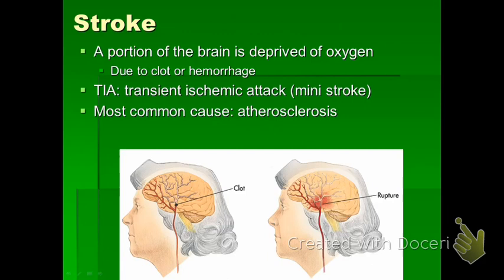A more serious general medical emergency is a stroke, also called a cerebrovascular accident or CVA. A stroke occurs when an area of the brain becomes deprived of blood and oxygen. This can occur as a result of a blood clot — a thrombus — blocking an artery, or when a blood clot or artery bursts, causing an aneurysm.